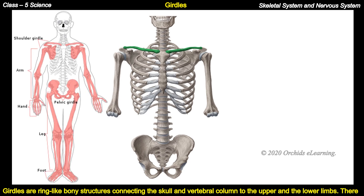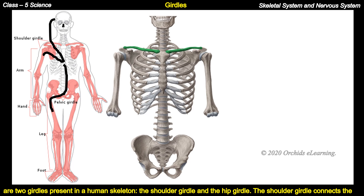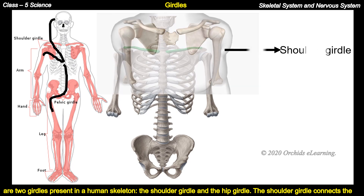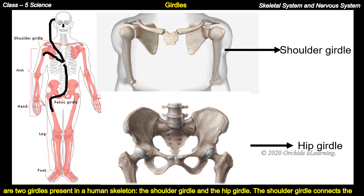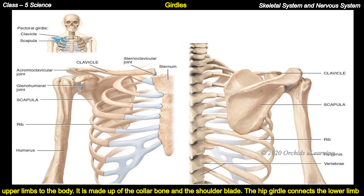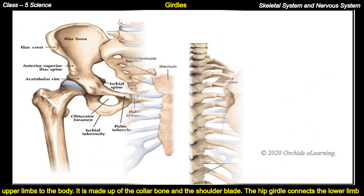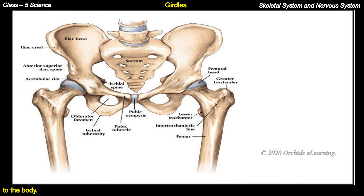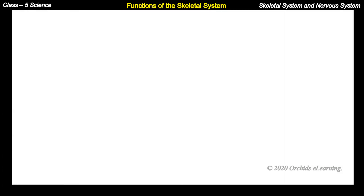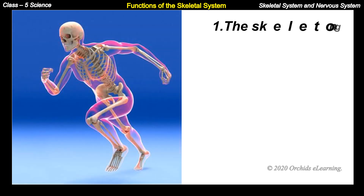Girdles are ring-like bony structures connecting the skull and vertebral column to the upper and the lower limbs. There are two girdles in a human skeleton: the shoulder girdle and the hip girdle. The shoulder girdle connects the upper limbs to the body; it is made up of the collar bone and the shoulder blade. The hip girdle connects the lower limbs to the body.